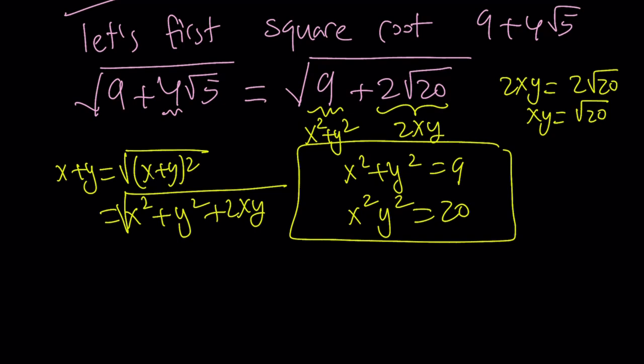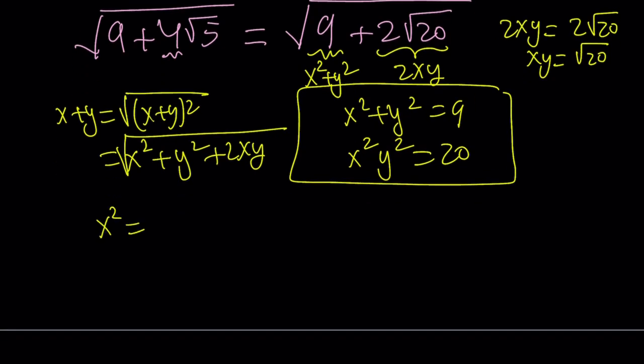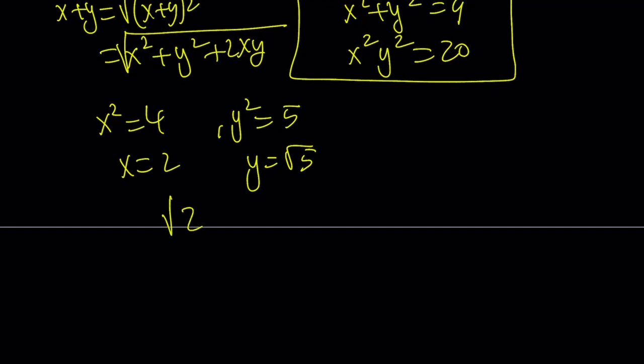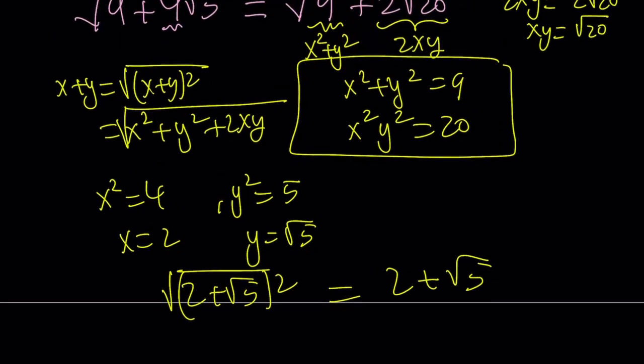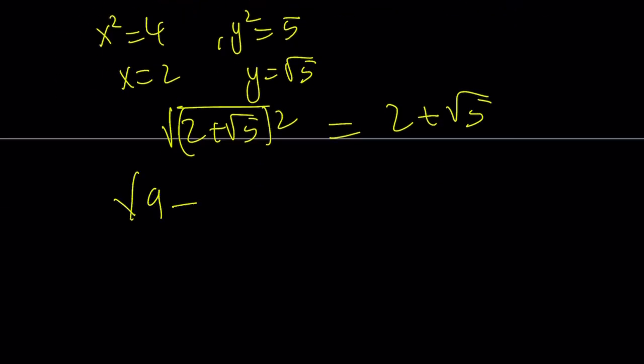For example, 4 and 5, right? Of course, they can switch around too, but that doesn't matter. So I can basically use 4 and 5. Now I also want an additional requirement. The additional requirement is that x and y are positive because I'm dealing with positive terms here. So I can now write it as, since x is going to be 2 and y is going to be root 5 from here, I'm basically dealing with the square root of 2 plus root 5 squared, and that is equal to 2 plus root 5. So that is the result of square rooting. In other words, the square root of 9 plus 4 root 5 is equal to 2 plus root 5.